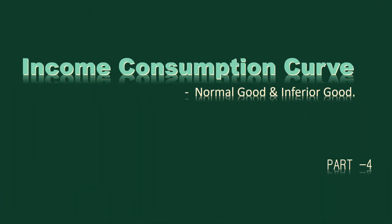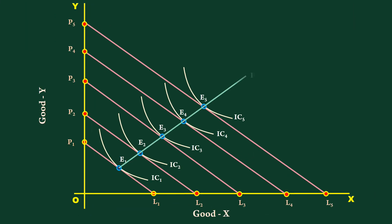Income Consumption Curve Normal Good and Inferior Good Part 4. An upward sloping income consumption curve suggests both good X and good Y are normal.